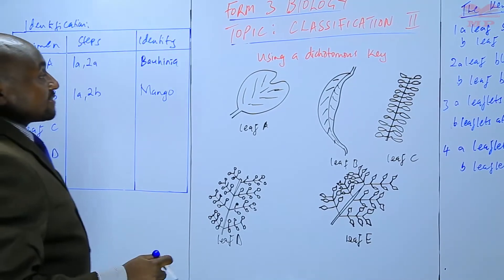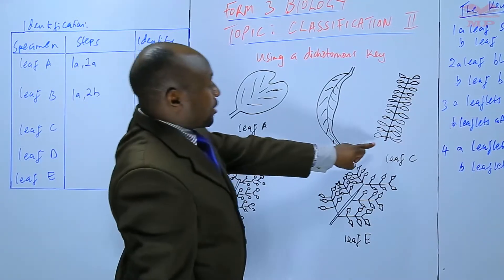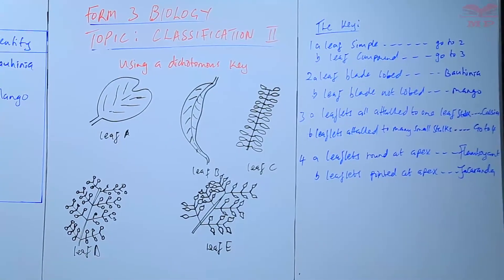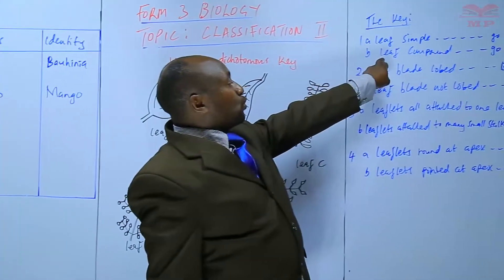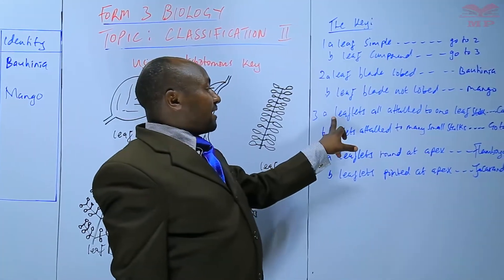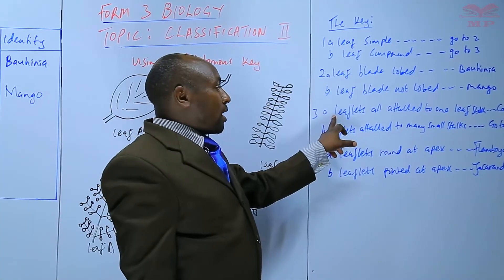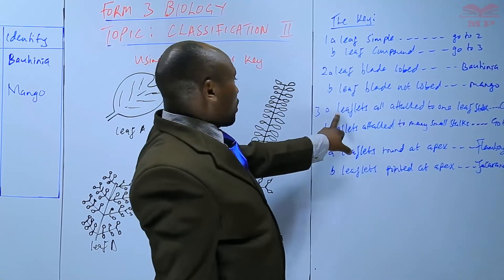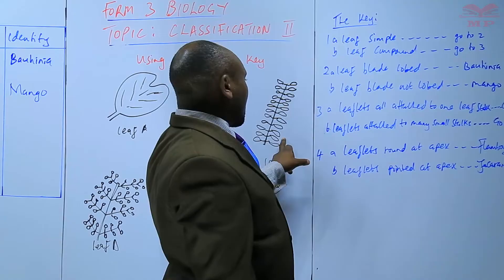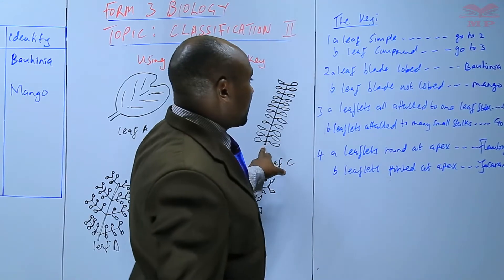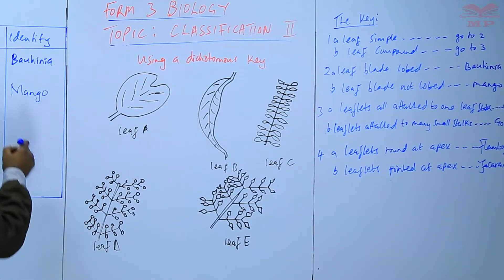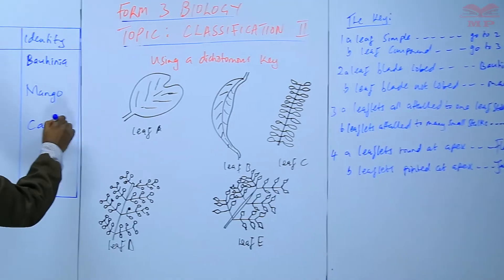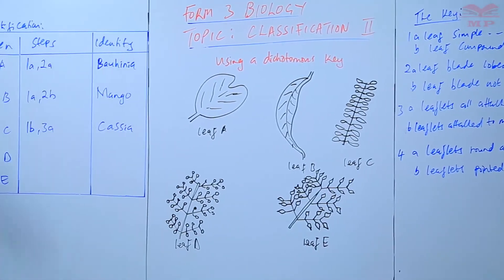For leaf C, this is a compound leaf, so we start with step 1b. We are told to go to step 3: leaflets all attached to one leaf stalk. Yes, the leaflets are all attached to one leaf stalk, so that is step 3a. The identity is Cassia.